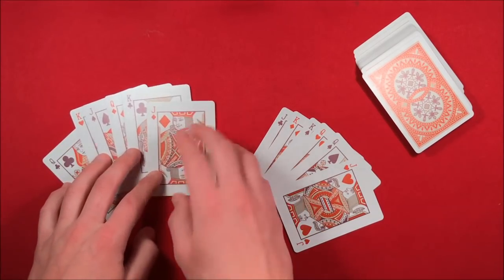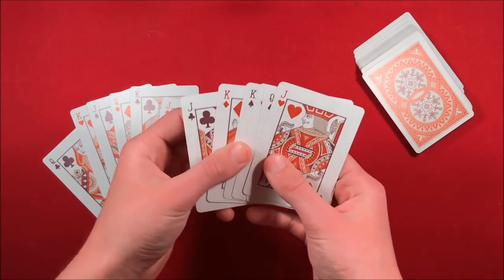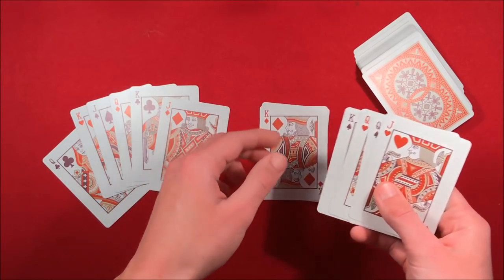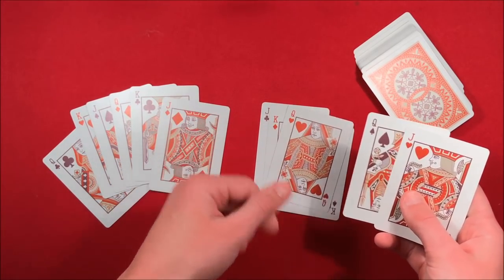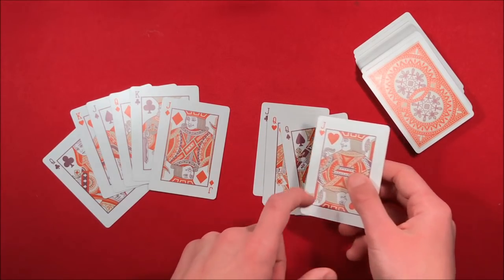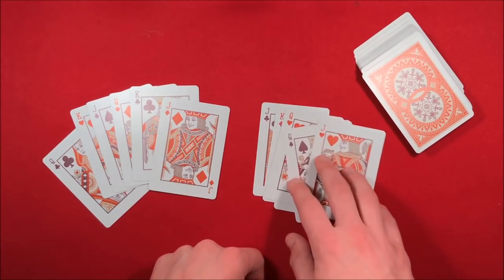And then what I did is I took each of their soulmates and I split them up. So this way in one packet I have one black jack, one red king, one black king, one red queen, one black queen, and one red jack like this.